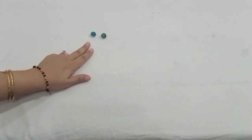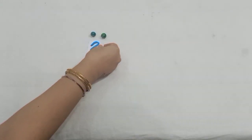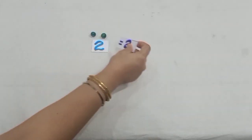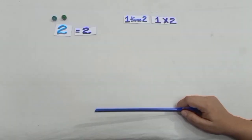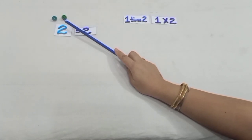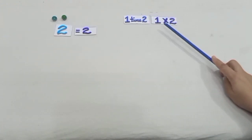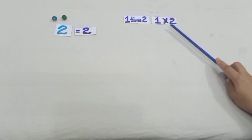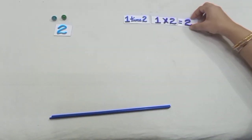Here we have 2 marbles, and that is equal to 2. We have 1 group of 2 marbles and we can write it as 1 times 2, which means 1 into 2 is equal to 2.